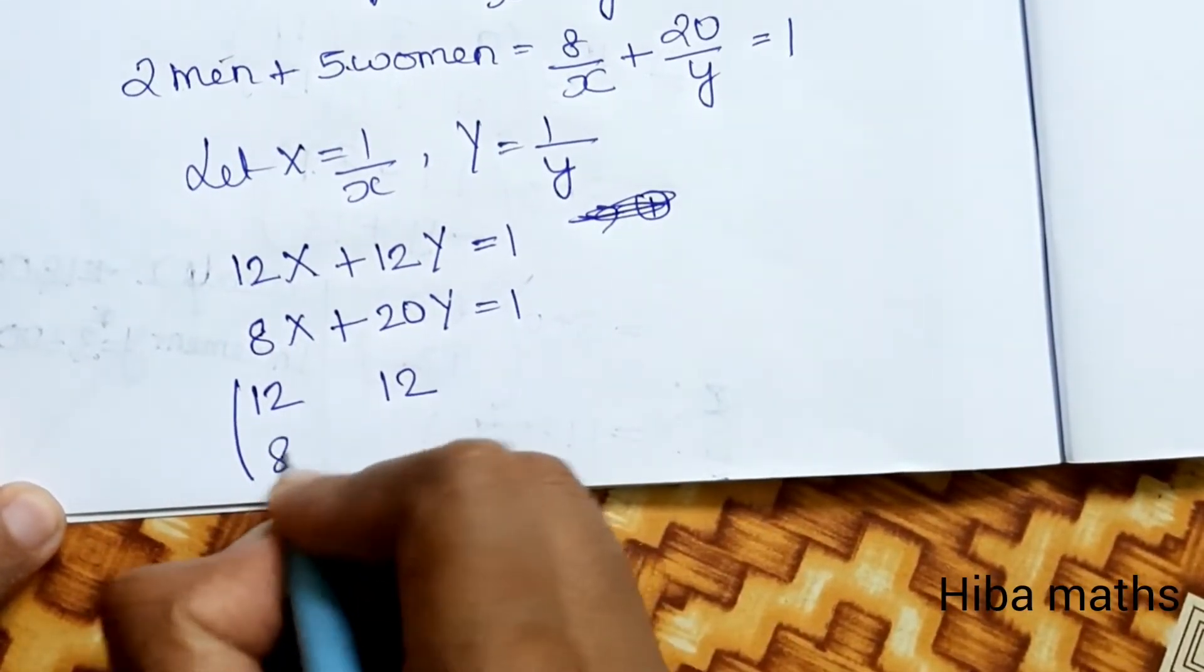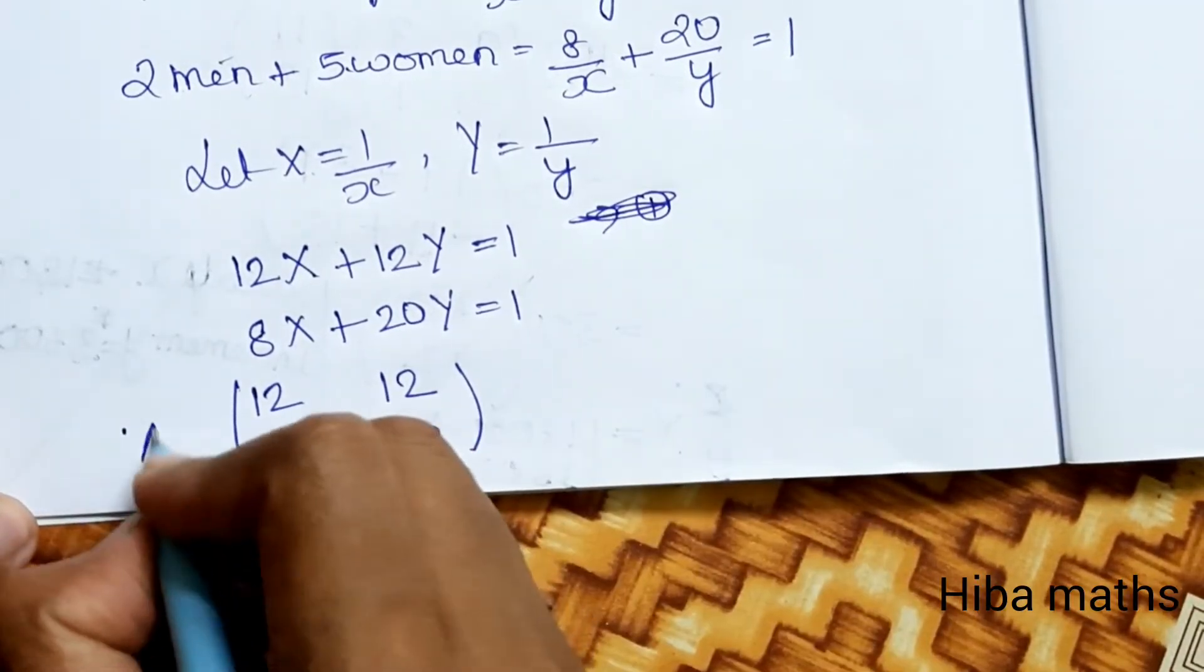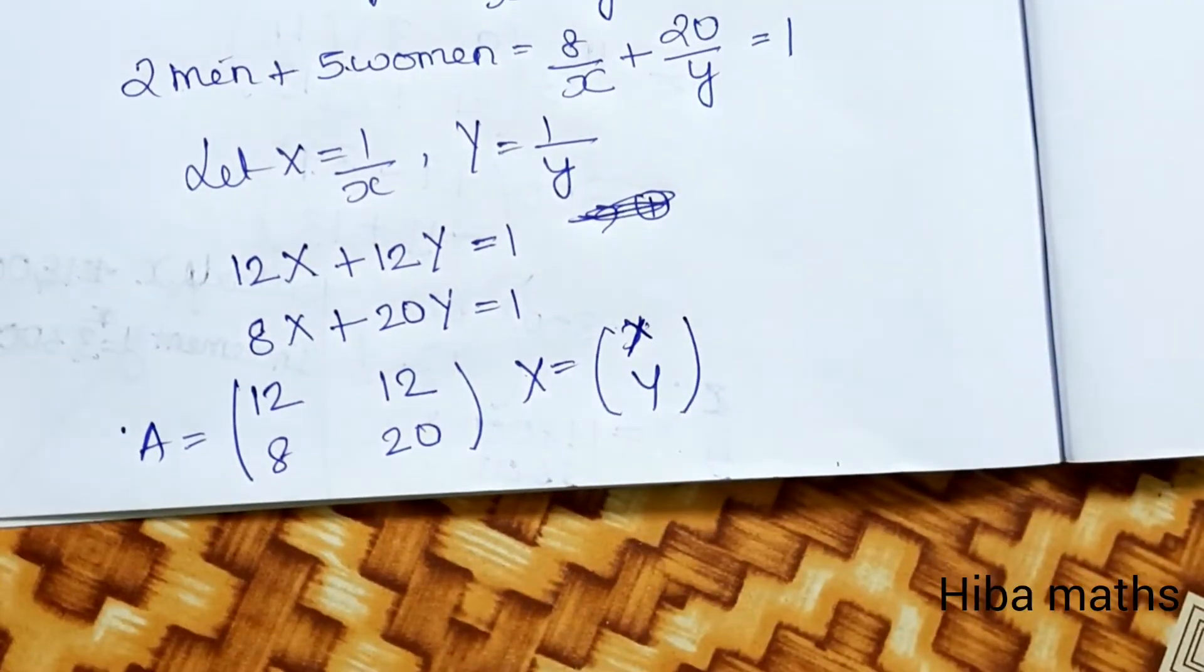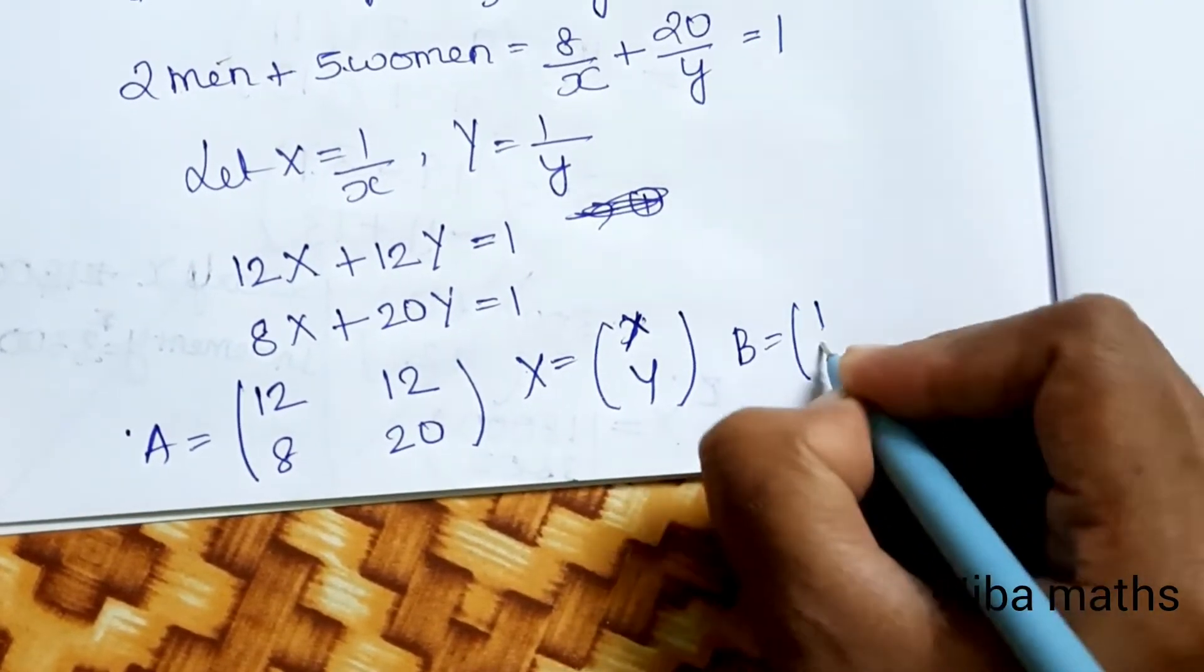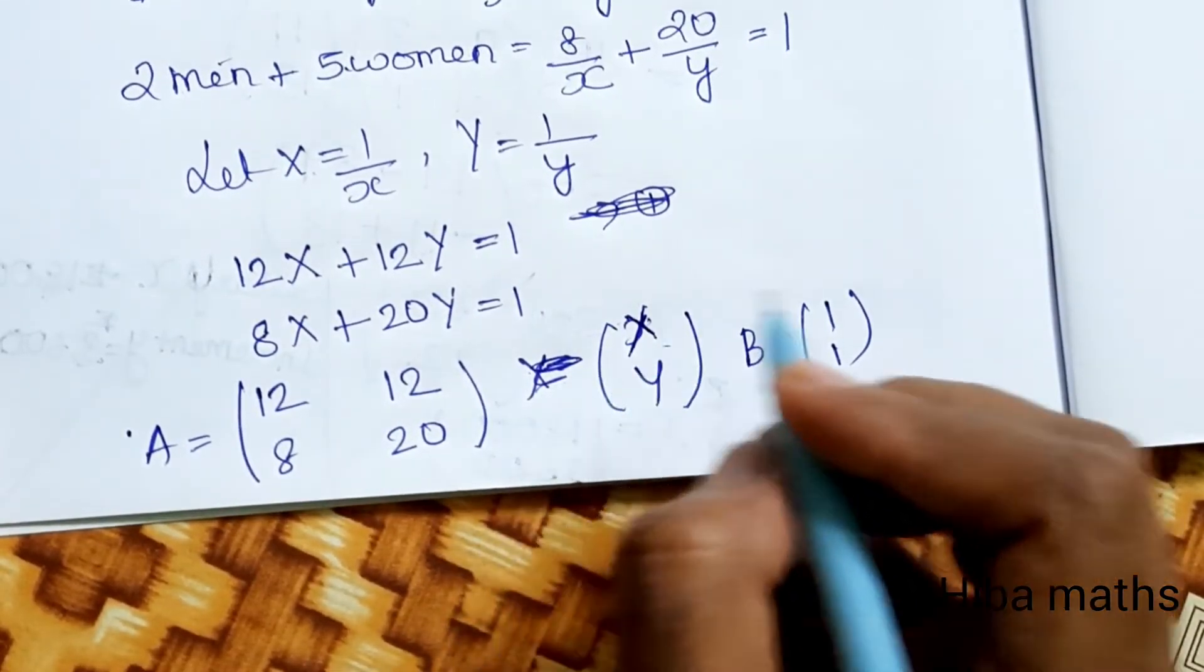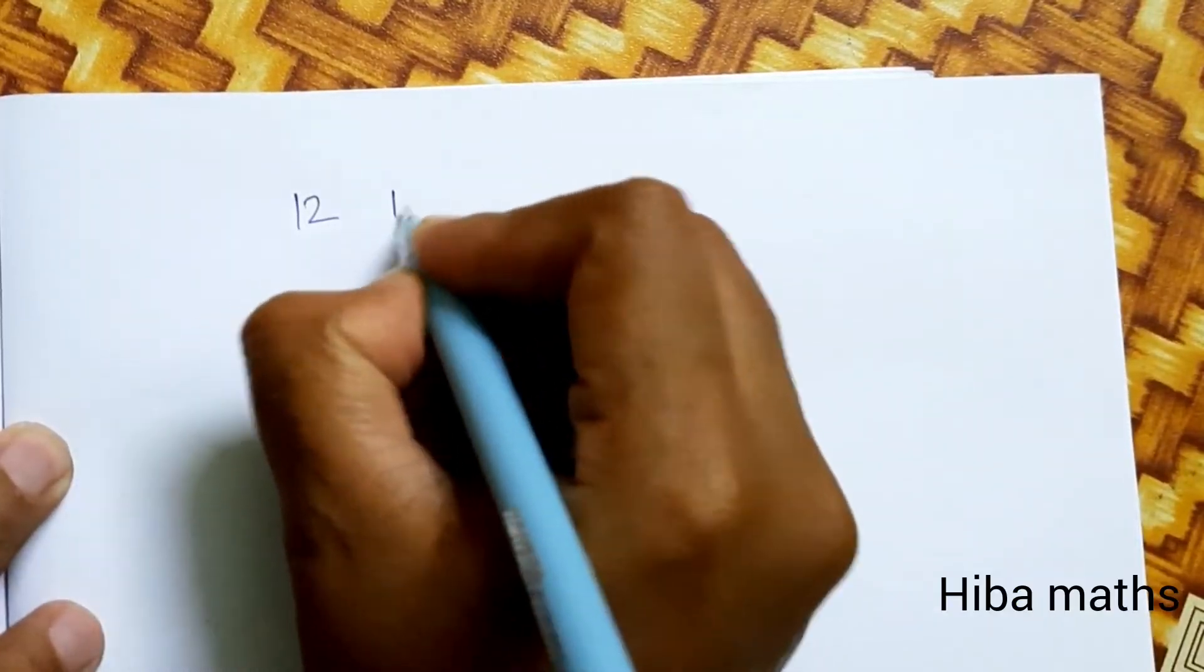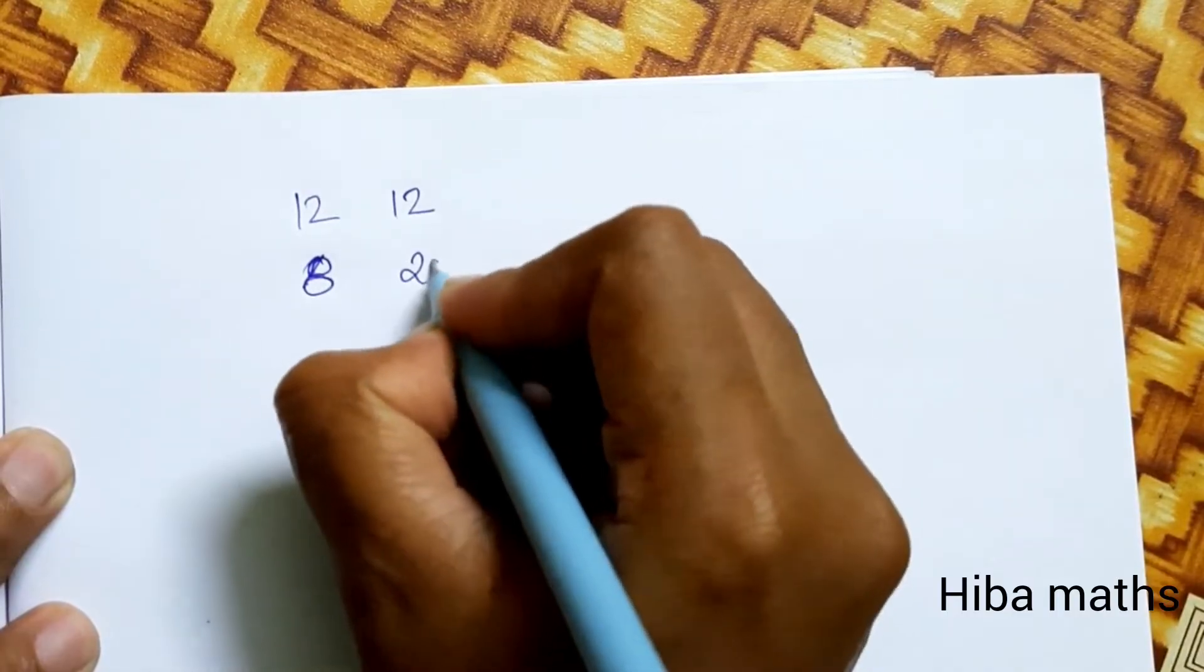The matrix is [12, 12; 8, 20], this is A matrix. The unknown matrix is X = [X; Y]. The resultant matrix B equals [1; 1]. We need to find X using the formula AX = B.